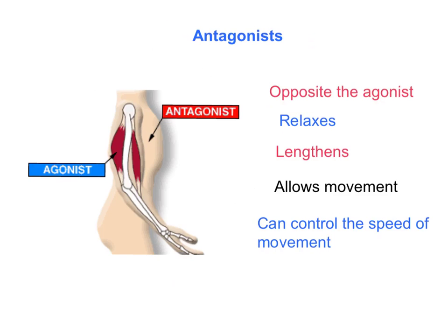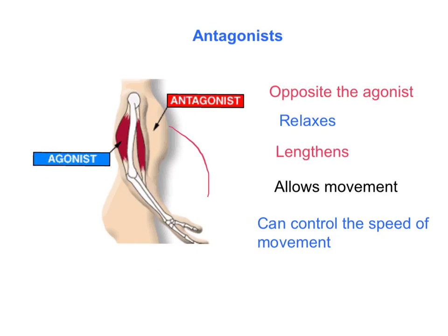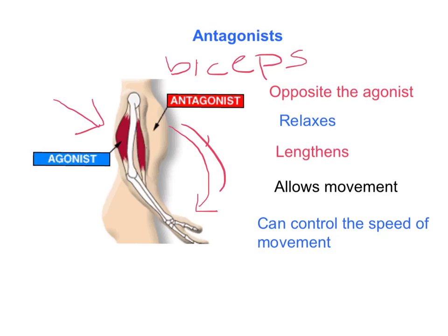Now we're still looking at the upper arm, but the arm has extended. So we've gone from our bicep curl and the arm has extended. The antagonist muscle is now the bicep muscle, and the agonist is the tricep muscle. The bicep relaxes, lengthens, and allows movement to occur. It can also be used to control the speed of the movement so the arm doesn't flop down suddenly.